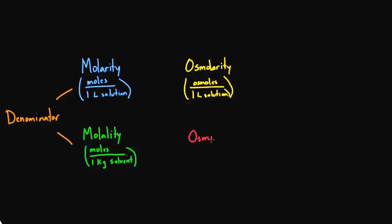And rounding it out, then you can imagine that there's a fourth word, osmolality. And osmolality is going to be the same numerator as osmolarity. It's going to be osmoles, except in the denominator, we're going to pick up that one kilogram per solvent definition. So that's osmolality.